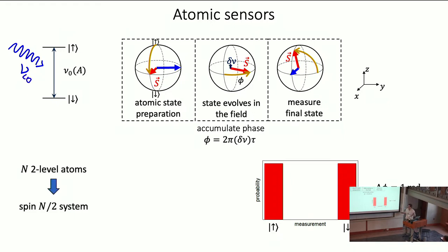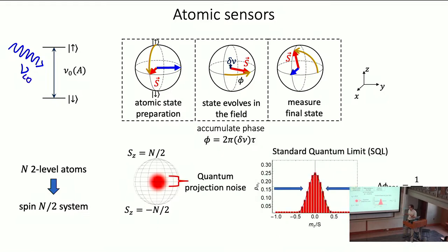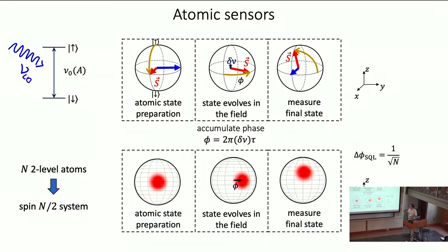So what everyone does is use many two-level atom systems. This can be mapped to a spin-N/2 system, and here appears a generalized Bloch sphere where the collective state is represented by a coherent state — shown as a Wigner function. When we perform our measurement, our sensitivity is limited by the width of the projection of this blob, which goes as one over square root of N. If we can reach this sensitivity, that's the standard quantum limit — you cannot go beyond it without using quantum entanglement or quantum correlations within the atoms.